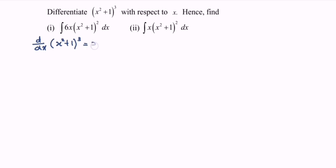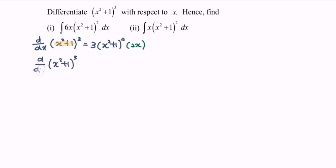We will have 3(x² + 1)² — do remember to differentiate the internal function — and we will have 2x. So simplifying, the derivative of (x² + 1)³ with respect to x equals 6x(x² + 1)².